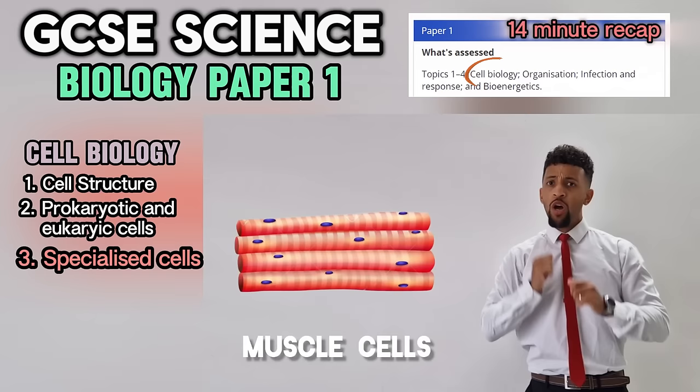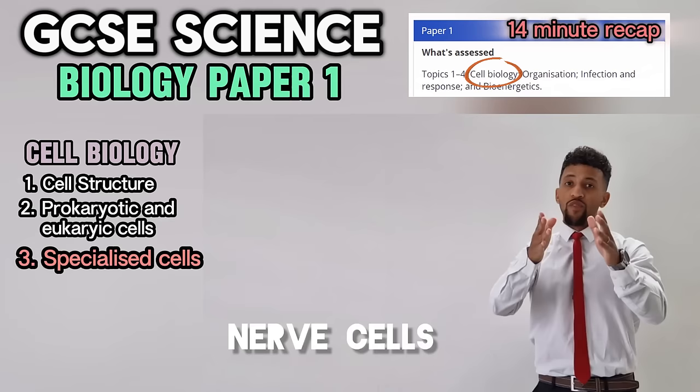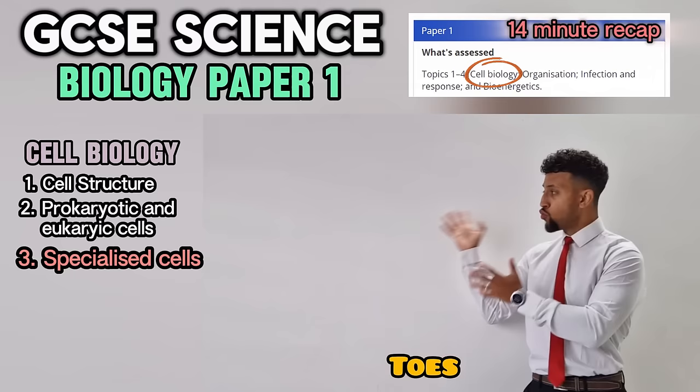Glycogen inside — that's a fact. Gotta go gym if you wanna get stacked. Nerve cells — stretch through your body like string. Axons covered in myelin, they're in your toes and in your chin.